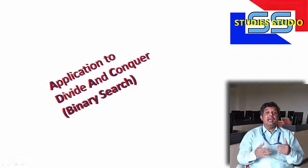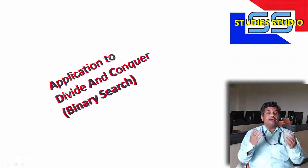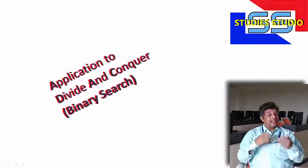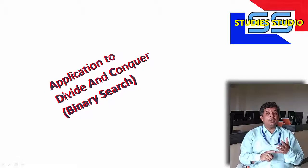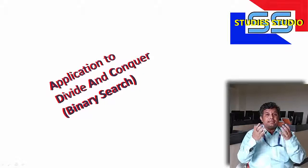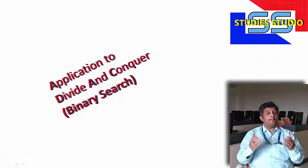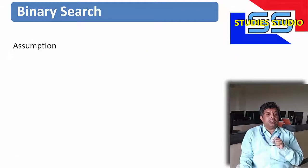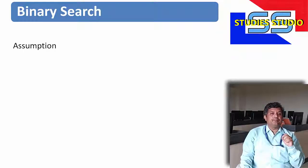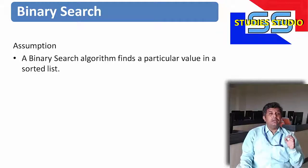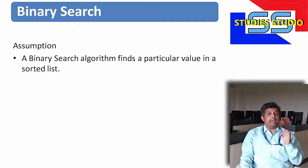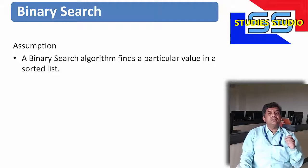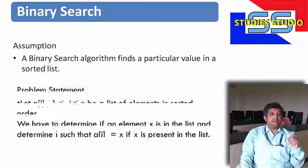We have already seen how Divide and Conquer Technique works to find the solution of a problem. In that video, we have seen what is Divide and Conquer Technique, what is the basic algorithm that we generally apply, and what is the basic process of finding the complexity of a Divide and Conquer algorithm. Today we are going to learn all those things with the help of Binary Search. In Binary Search, the assumption is we are searching a particular value in a sorted list by applying this method, that is Binary Search.